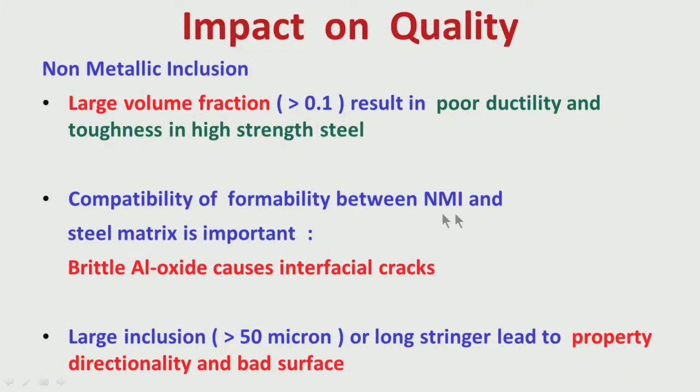As I was telling you, brittle inclusions like aluminum oxide or titanium oxide, if present in large amounts, might generate cracks on the surface of the steel, which is undesirable. So I have talked about the different undesirable constituents in steel — inclusions, residuals, and trace elements — and how they impact the quality of the final product.